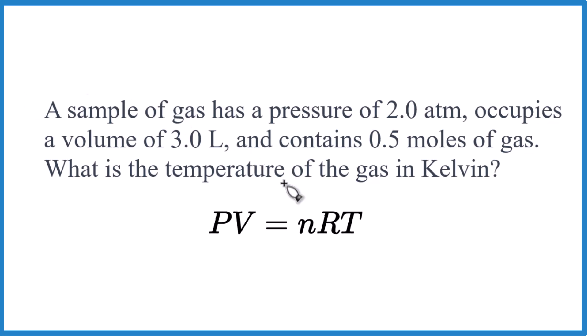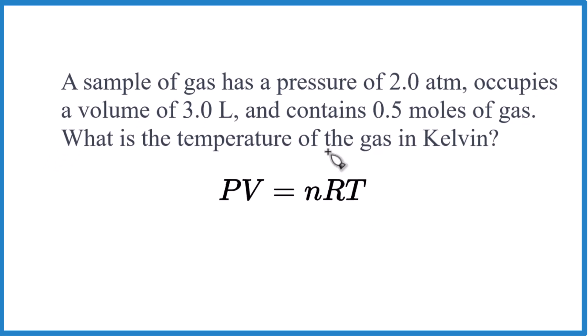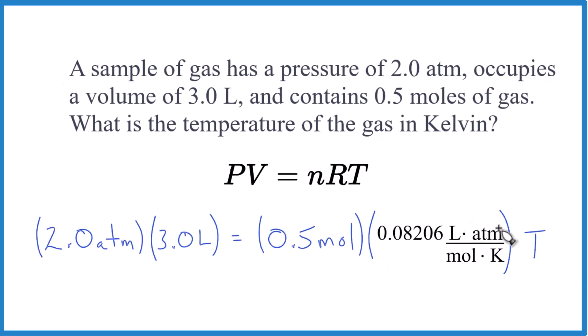So here's a typical PV equals NRT ideal gas law problem. Pause and see if you can set it up. We have our atmospheres here, that's pressure, volume in liters. We have our moles here. R, we're going to look up, and we're looking for temperature. What is the temperature? So here's how I set it up.